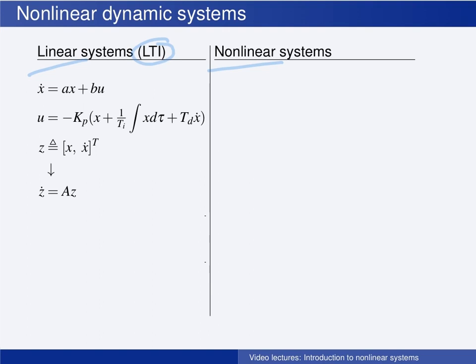As you know, there exists an analytical solution to this differential equation, given by this equation here. This means that the time evolution of the state of the linear closed loop system is given by the matrix exponential times the initial value of the state. And the state at any time t is uniquely given by this equation.